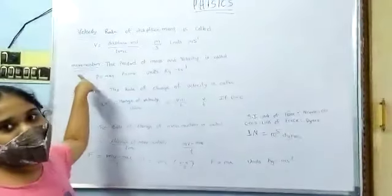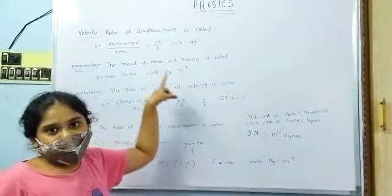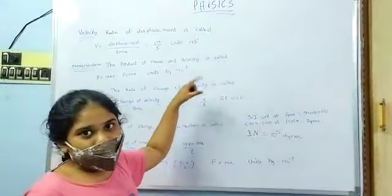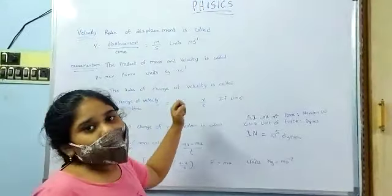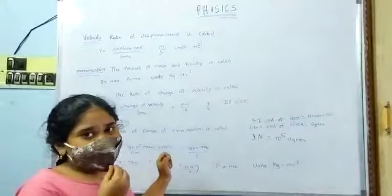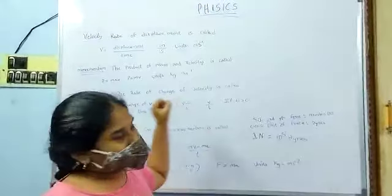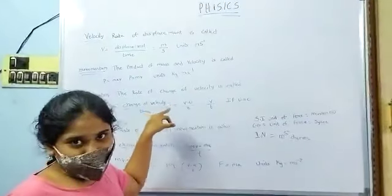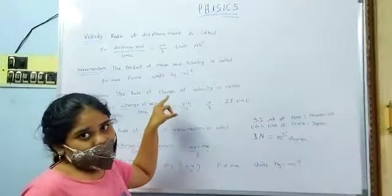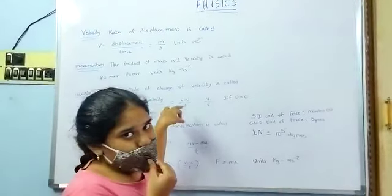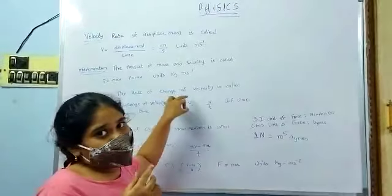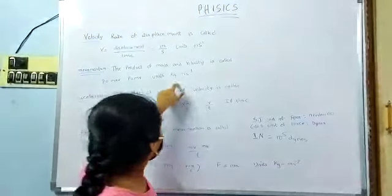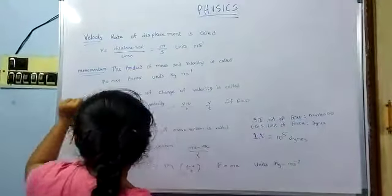Next, momentum. The product of mass and velocity is called momentum. P is equal to m into v. Units: kg meter per second.